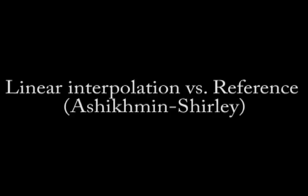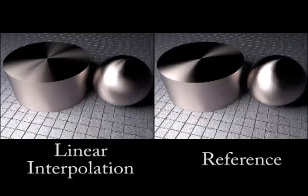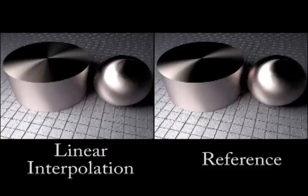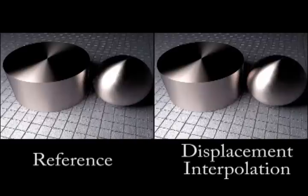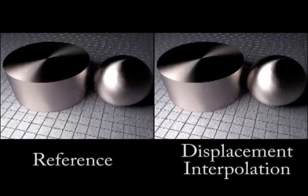Displacement interpolation can be used for interpolating sampled BRDFs. Here we see that linear blending produces ghosting rather than the desired interpolation. Using displacement interpolation results in a proper rotation of the anisotropic reflectance.